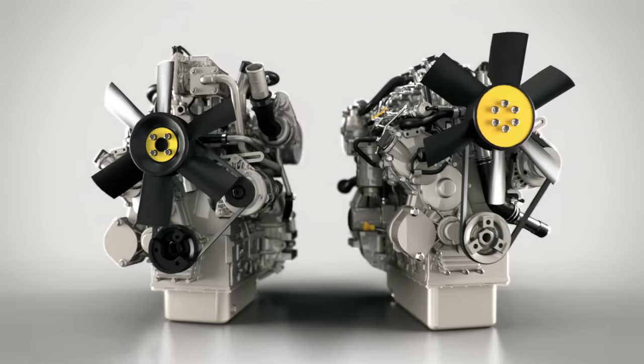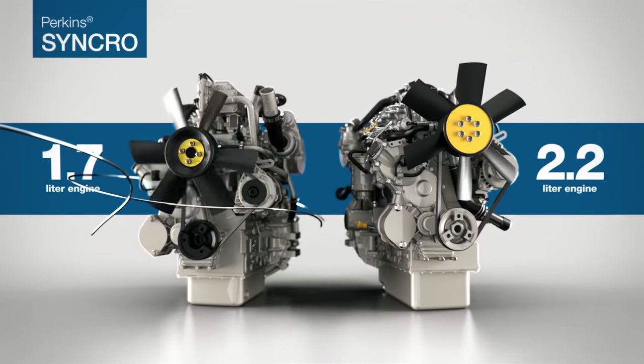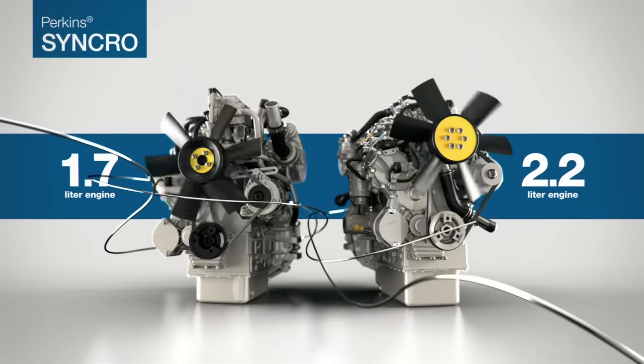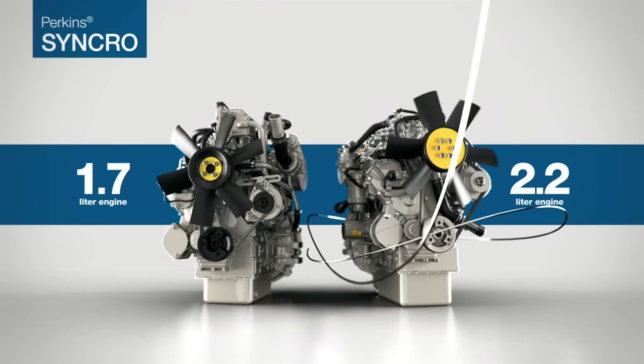The new Perkins Syncro 1.7 and 2.2 liter engines are powerful additions to our world-class product range, tailor-made to deliver reliable and optimal performance for an array of compact machines.